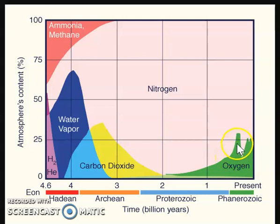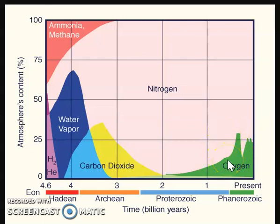A really key thing had to happen around this time for our second great input of oxygen — the formation of the ozone layer. Ultraviolet light penetrates through the atmosphere all the way to the Earth and can damage living life.